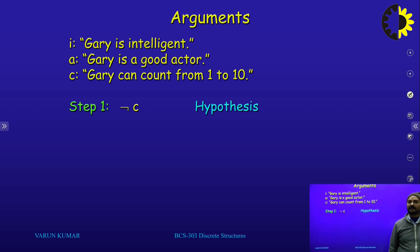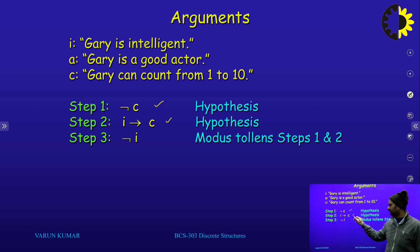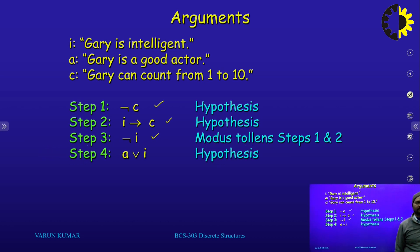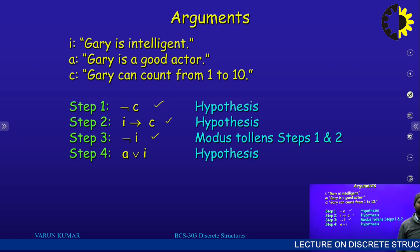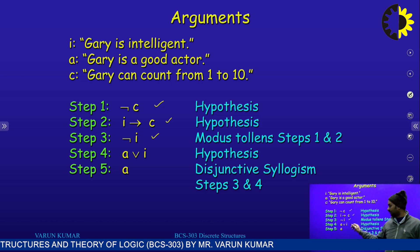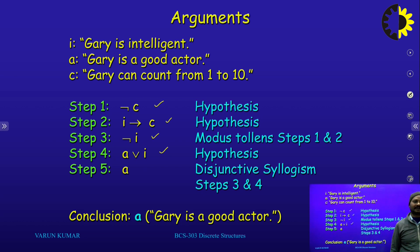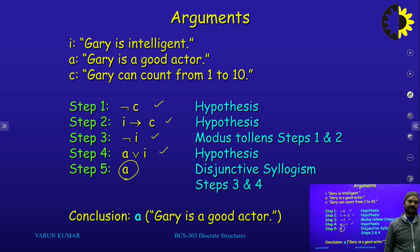Step 1 hypothesis: negation of C. Then I tends to C. Then negation of I — that is Modus Tollens between steps 1 and 2: if negation of C and I tends to C, the result is negation of I. Step 4: A disjunction with I — that is also a hypothesis. Finally, if A disjunction with I is true and I is not true, then A is always true. Our conclusion is valid because Gary is a good actor.